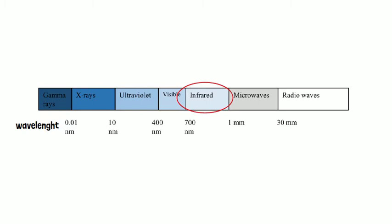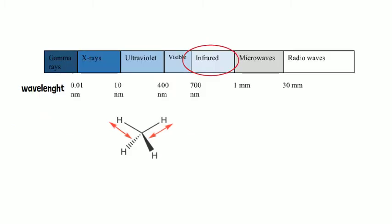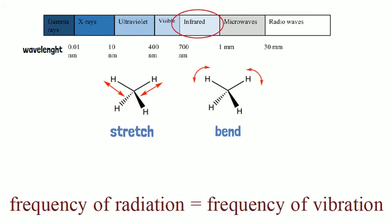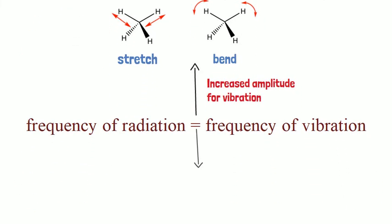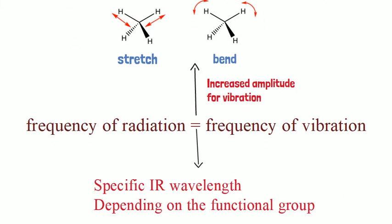All molecules are in constant vibration. In other words, the bonds are not stiff. Rather, they can stretch and bend. Now, when a molecule absorbs radiation that matches the frequency of one of its vibrations, an increased amplitude for the vibration is observed. These vibrations occur at a specific IR wavelength and depend on the functional groups present.